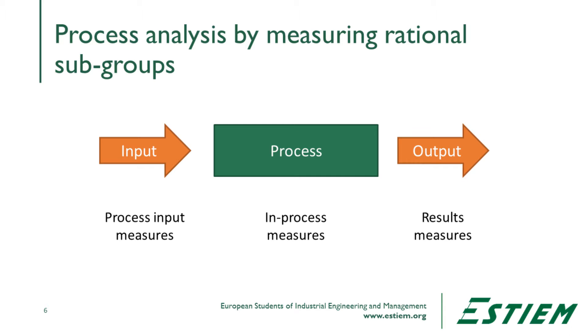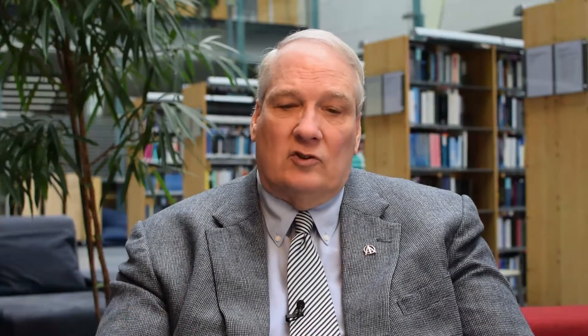All key process subgroups that influence performance need to be characterized to understand how flow across each process step is occurring. The results measures describe the level or rate of performance change. However, the in-process measures are the building blocks that create the results. Those in-process measures are how we're going to improve efficiency and effectiveness to get a change in results, so we'll tend to focus on those in-process measures.